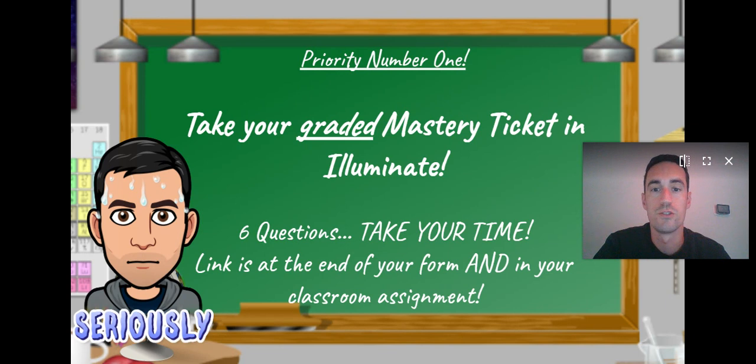There are two places you can get to your mastery ticket when you are done with the article. The very last page of your Google form will have the link to your mastery ticket, and you can just click on it and go straight from there. If you submit your Google form first, in the classroom assignment, the actual assignment page, the second link that says 'quick access login' is your mastery ticket.